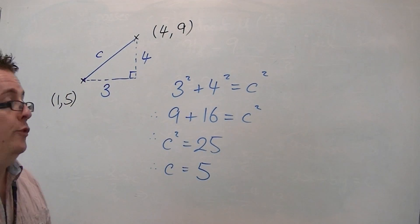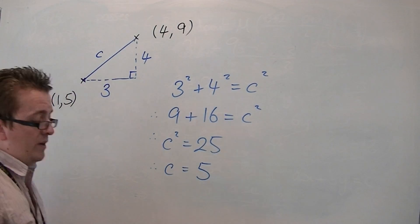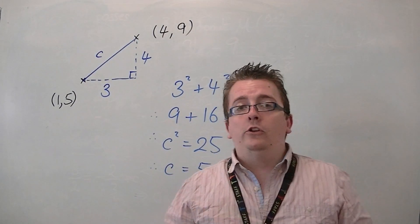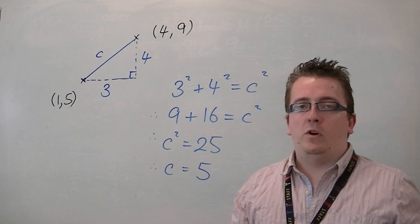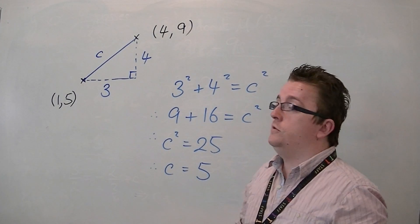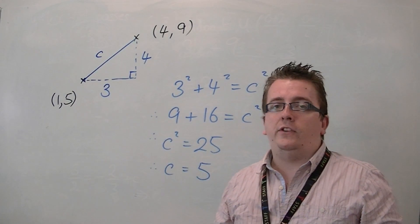So, I just picked a 3, 4, 5 triangle to make sure the numbers were nice. So, you can use Pythagoras' theorem to solve this problem, to be able to find the distance between any two points on the Cartesian grid.